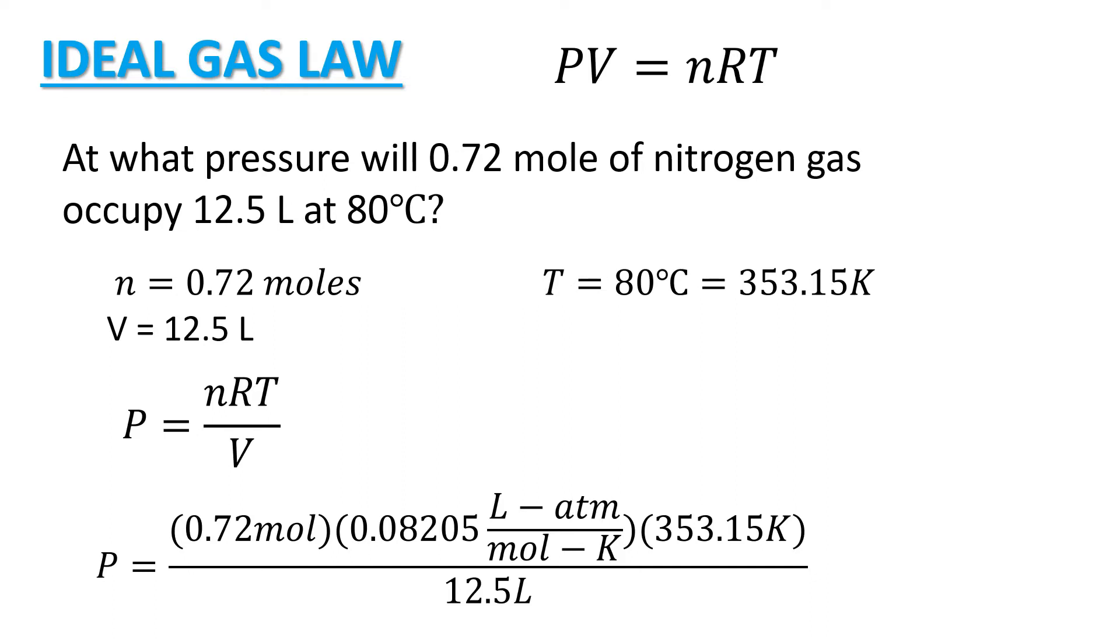So substituting the values we have now, the pressure of the gas will be equal to 0.72 moles times the R 0.08205 liter atmosphere mole Kelvin times the absolute temperature of 353.15 Kelvin all over the volume 12.5 liters. As you can see here, the units of moles, liters and Kelvin will be cancelled out leaving us with the unit of atmosphere for our unknown pressure.